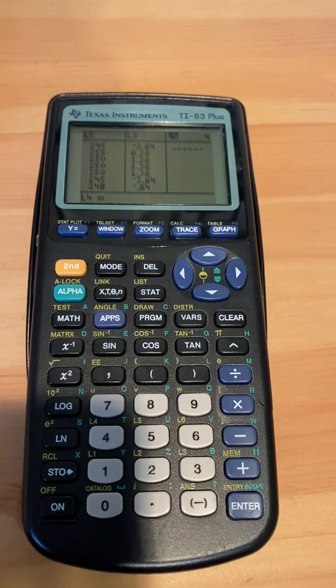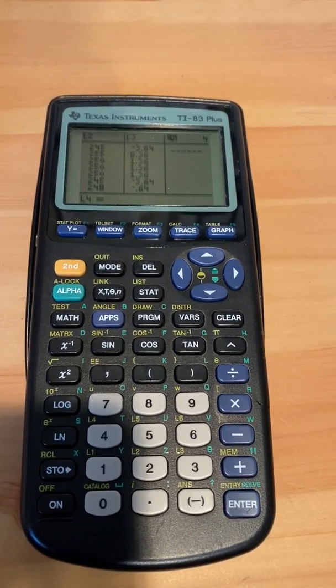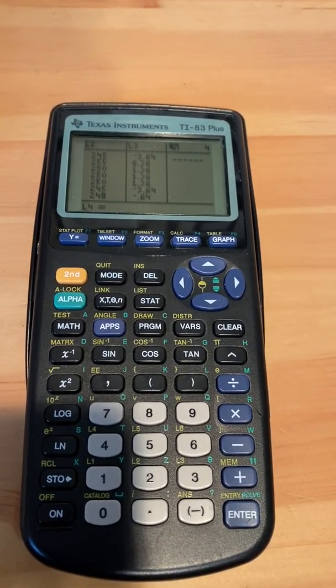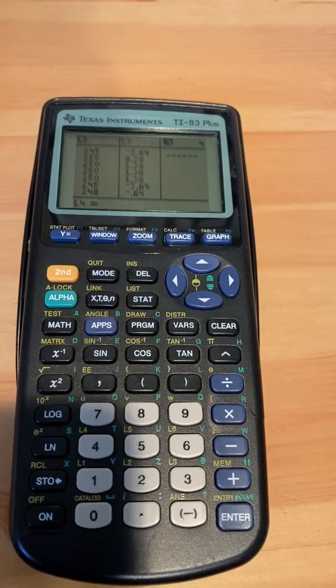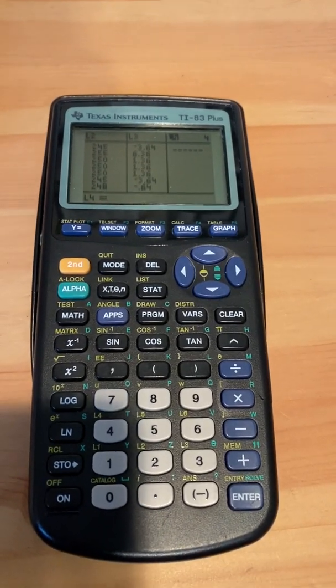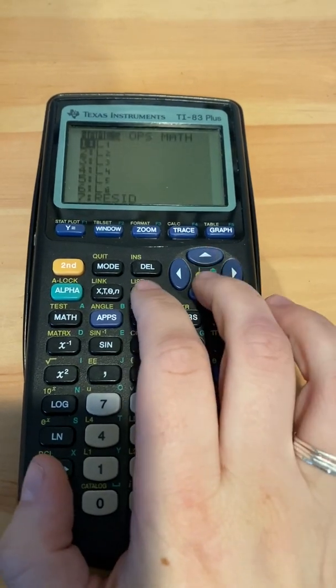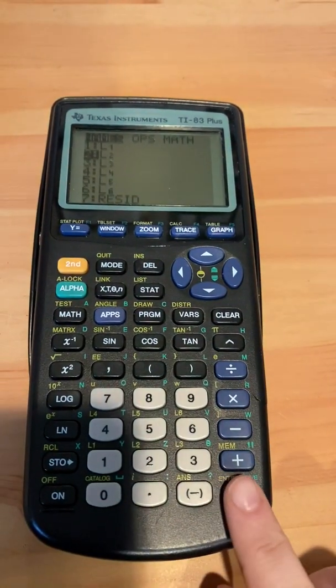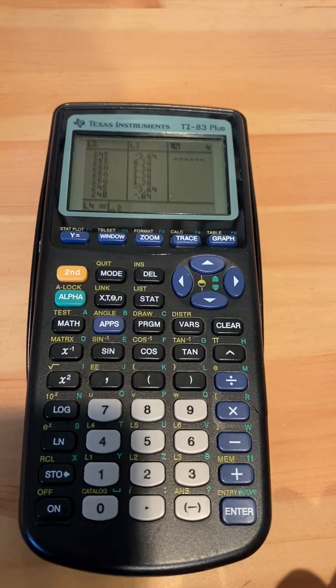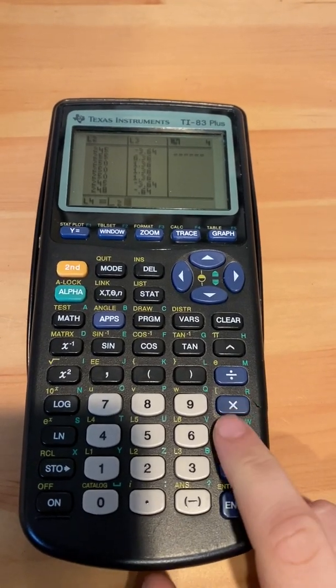So we learned that if we take list two and we subtract list three, we're going to get the predicted amount. All right, so how to do that is you're going to go second list, we're going to highlight list two. So notice how list two is here, we're going to press minus.